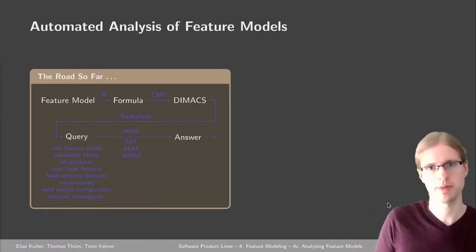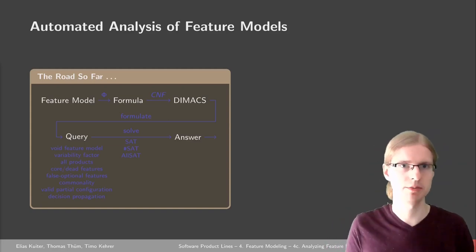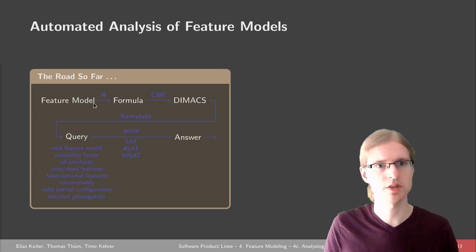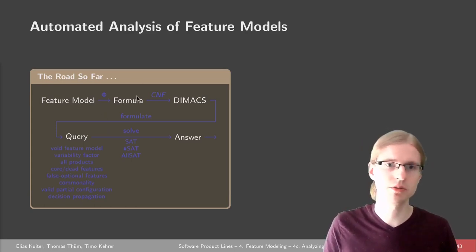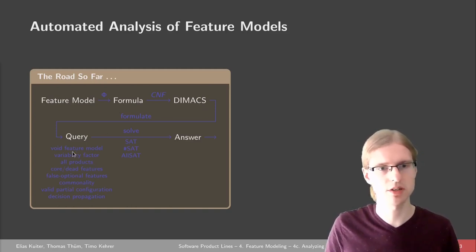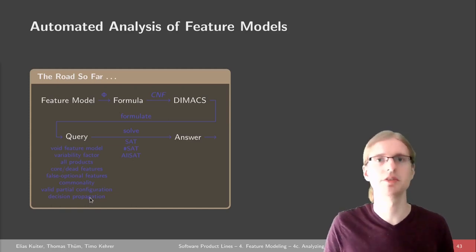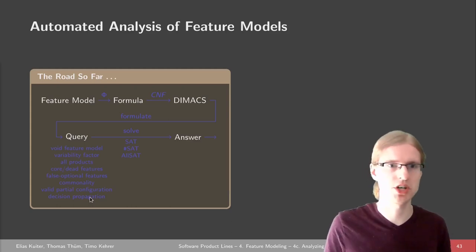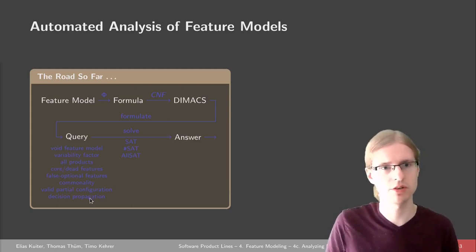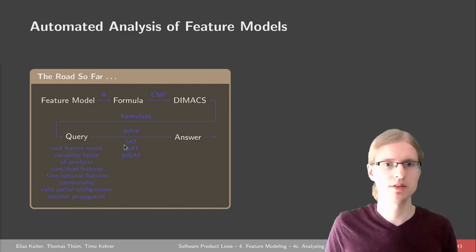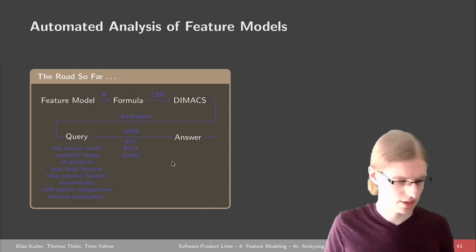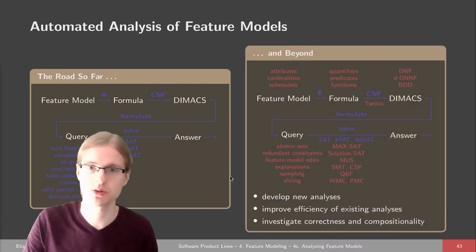Let's recap. We've seen different examples of how to analyze feature models. The basic idea was always that you take a feature model, translate it into a formula, which is translated into conjunctive normal form. We have lots of queries you can answer for different use cases — maybe for marketing, bug fixing, testing, implementation, requirements engineering, or scoping. We've seen solver classes to answer these queries, and that's the road so far. But there's also a lot of open research left.